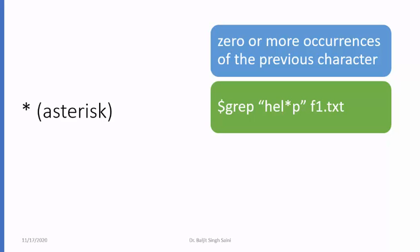For example, if you write grep hel*p in the file f1.txt, this means you are looking for a pattern in which l can occur zero or more times. So you are looking for those lines which contain hep, help, hellp, helllp, and so on — h followed by e, followed by zero or more occurrences of l, and then followed by p.